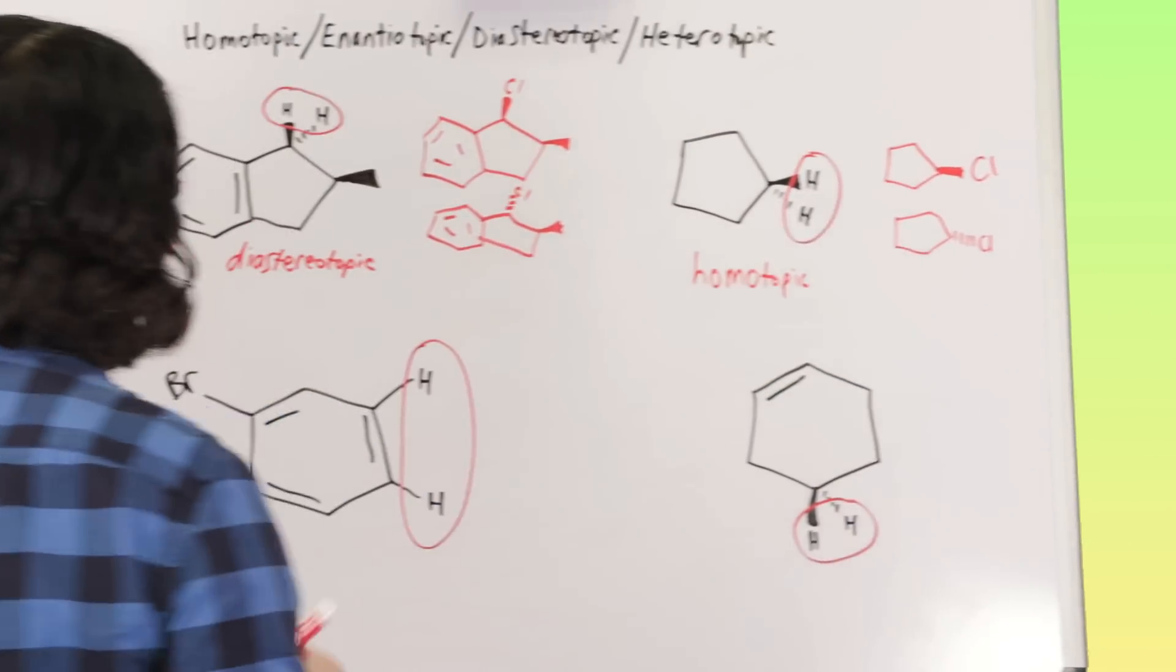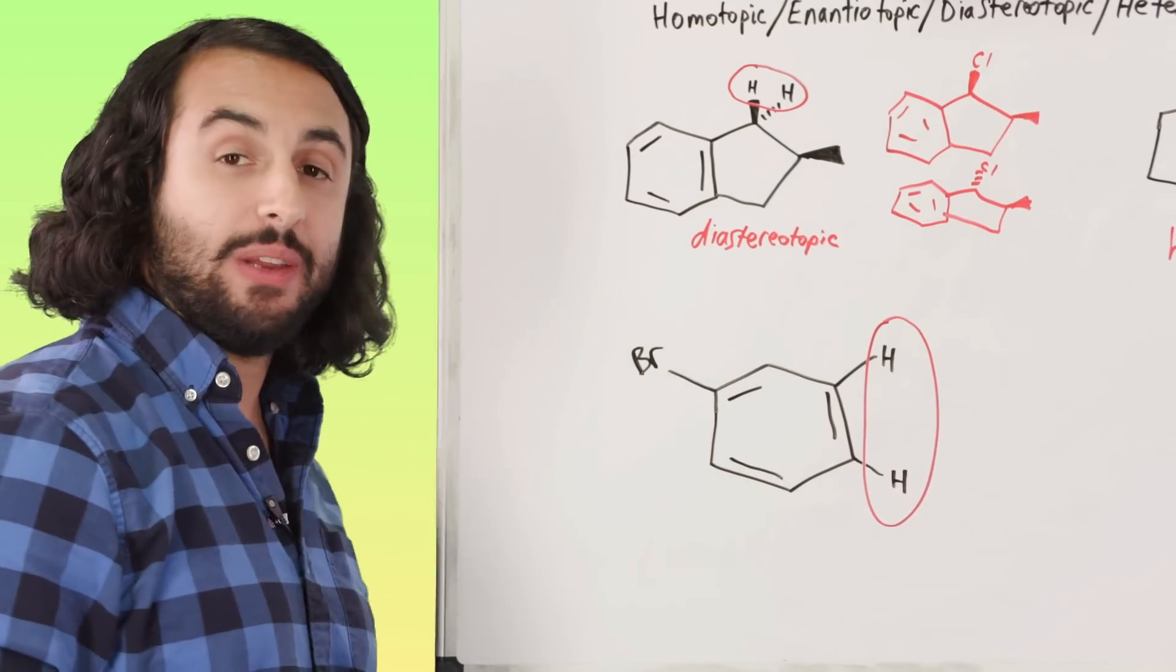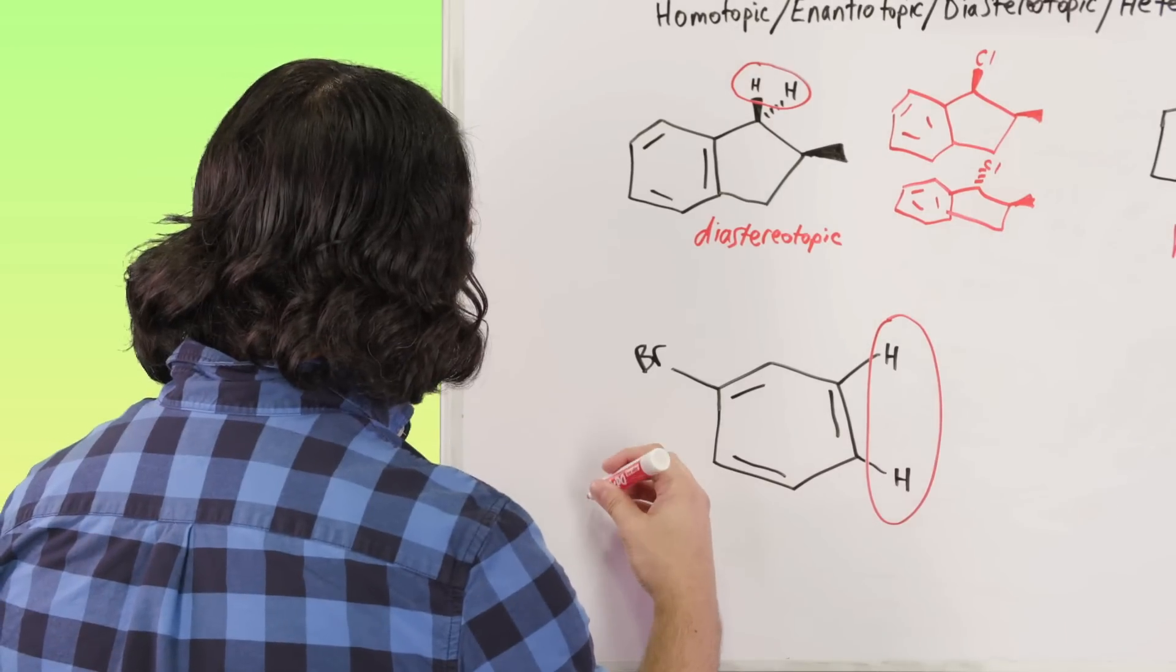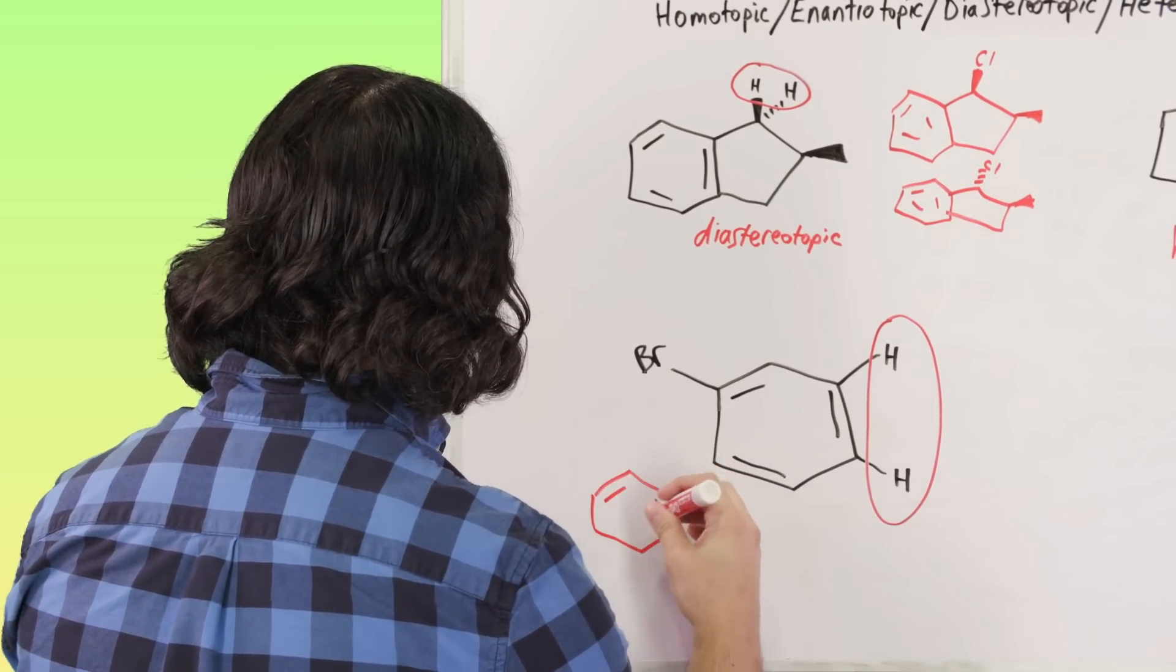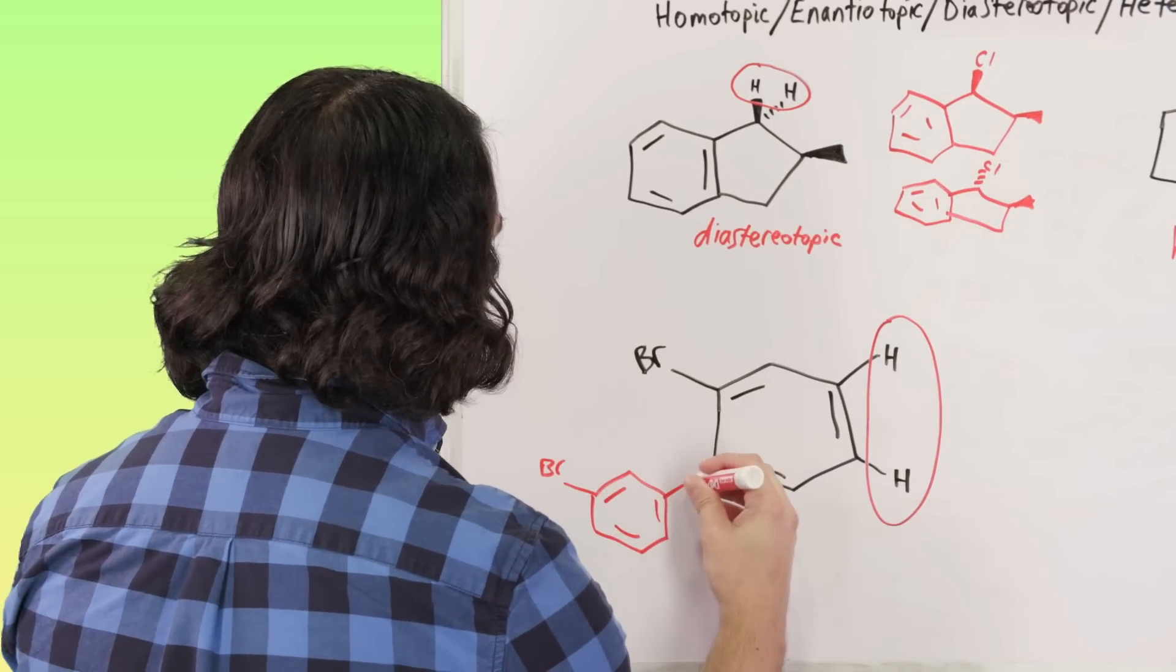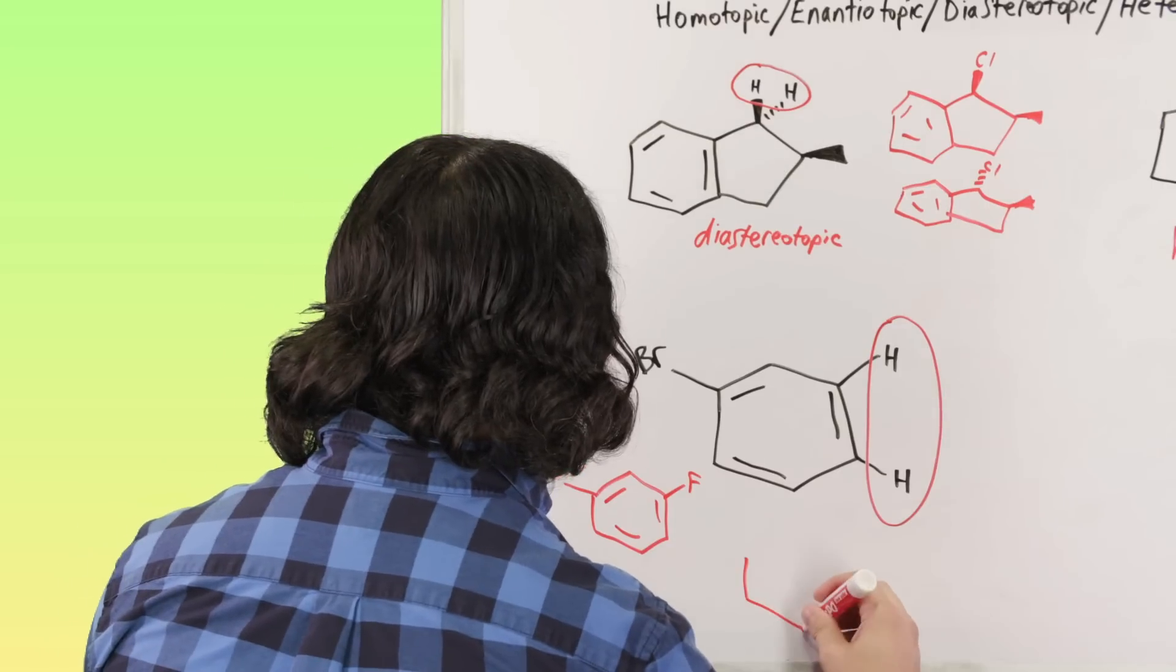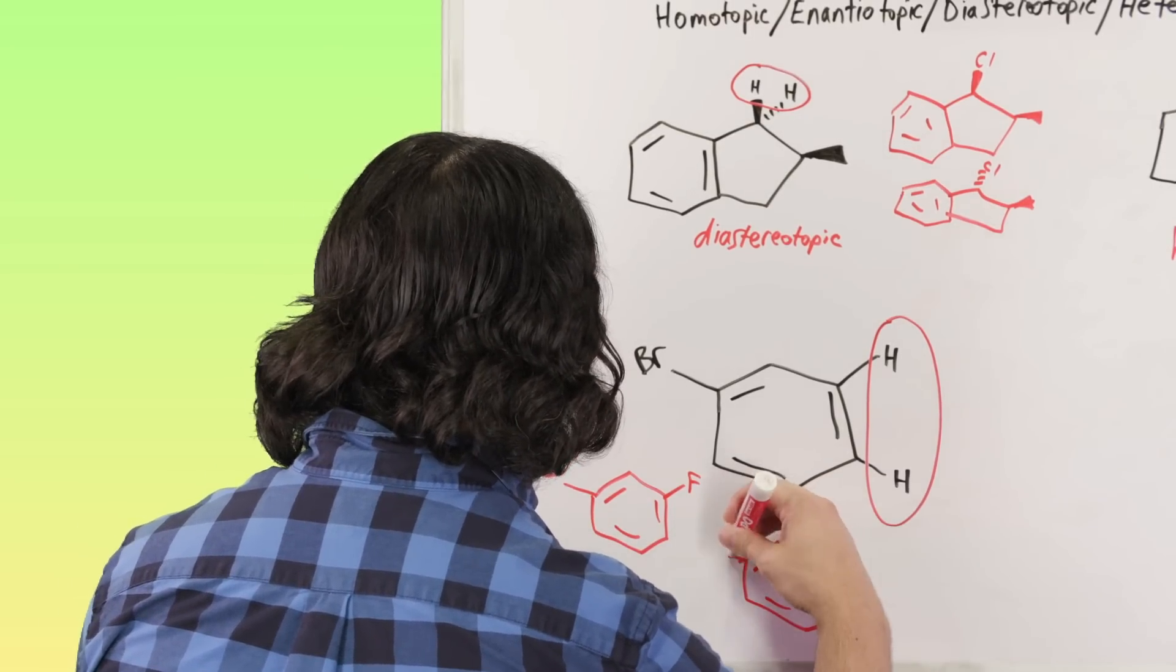Now let's look at this one. We have this situation where we have a benzene ring, we have a bromine, we have bromobenzene, and we're looking at these two hydrogens, so let's draw what we would get. So we have the bromine here and that's very important because let's say we change this to fluorine, or we can change the other one to fluorine or something else, doesn't matter what it would be.